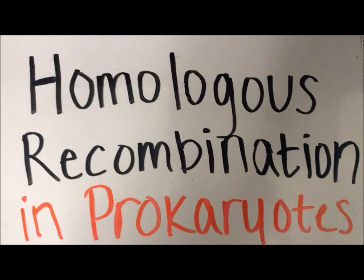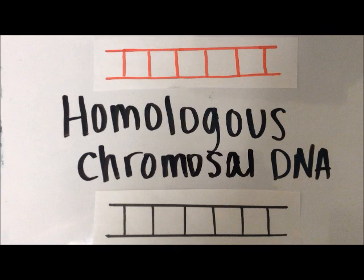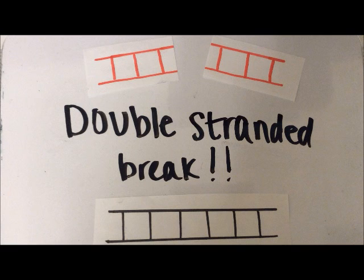This is a description of the mechanism of homologous recombination by Anastasia Murthy and Artemisa Boku. These are homologous molecules of chromosomal DNA. First, a double-stranded break occurs due to cellular stress or UV damage.